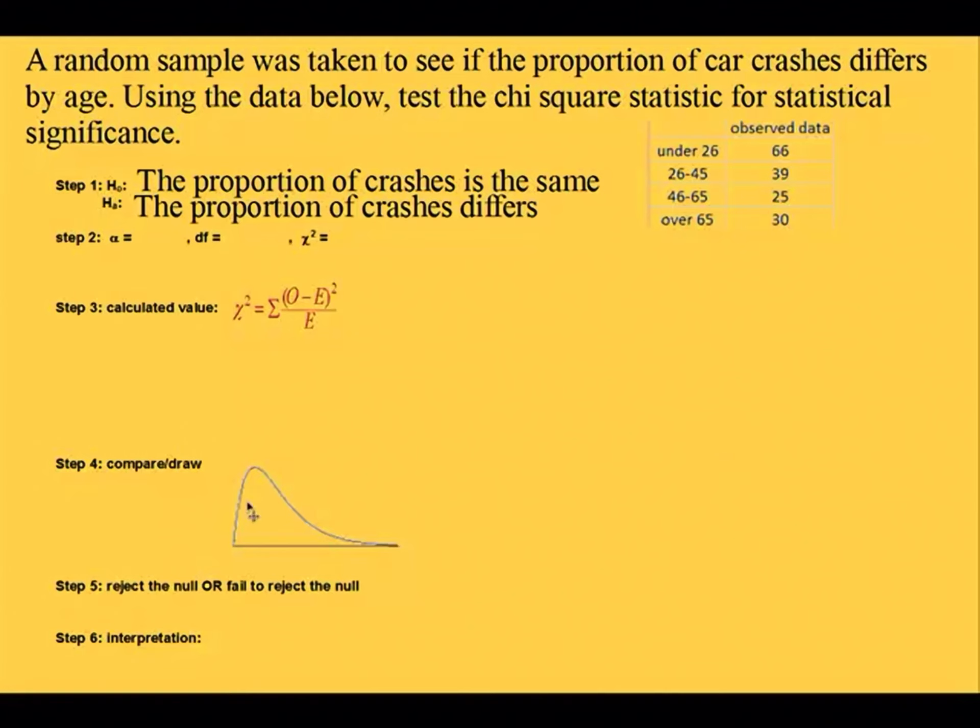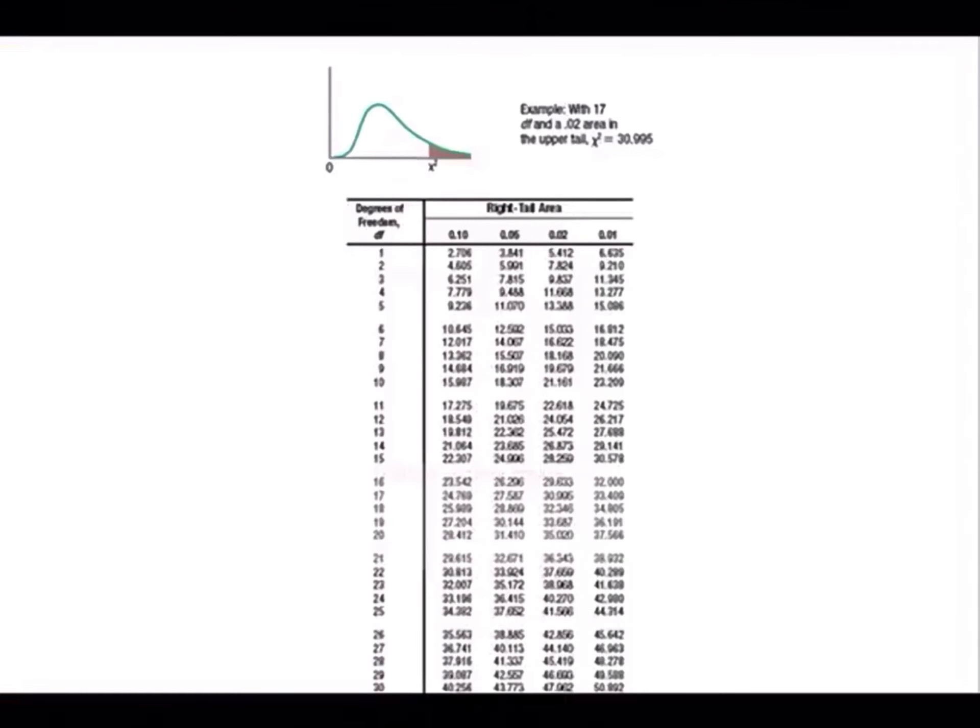When we want to do our actual hypothesis test, we would have to see what the critical value is. Since alpha is not mentioned, we would have to go with the assumed value, the default of 0.05. There are 1, 2, 3, 4 groups, so our degrees of freedom will be the number of groups minus 1, or 3. So now we need to go to our chart. With 3 degrees of freedom and 5% significance, our critical value would be 7.815.